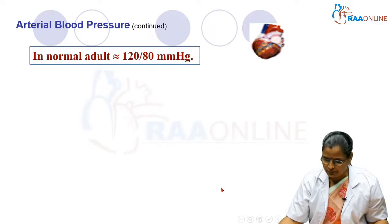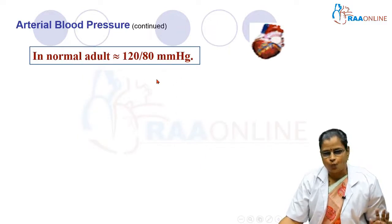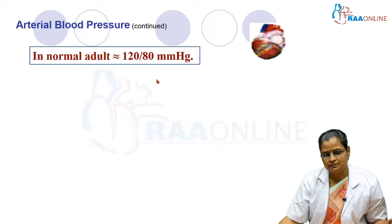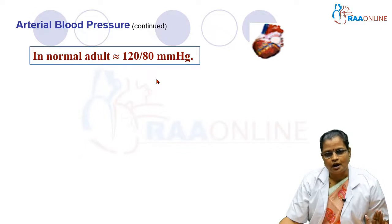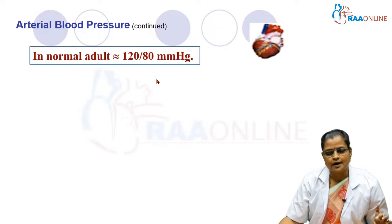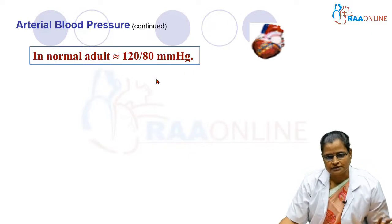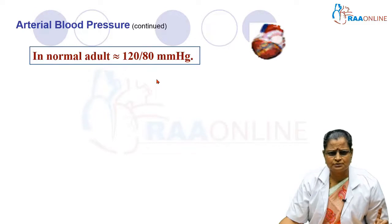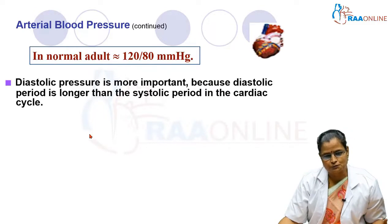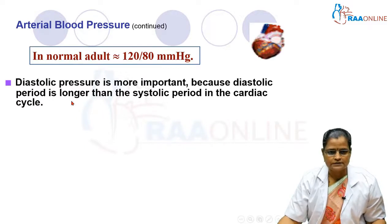The normal value of blood pressure is about 120/80 mmHg — 120 is the systolic and 80 is the diastolic. The normal range is 110–130 systolic and 70–90 diastolic. Diastolic pressure is more important because the diastolic period is longer than the systolic period in the cardiac cycle.